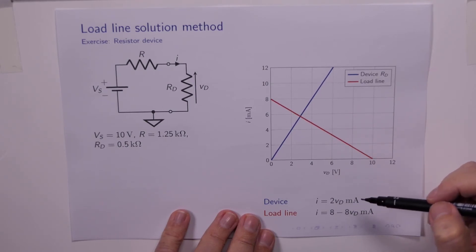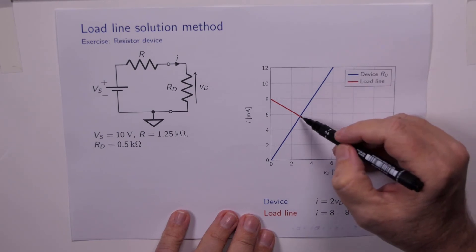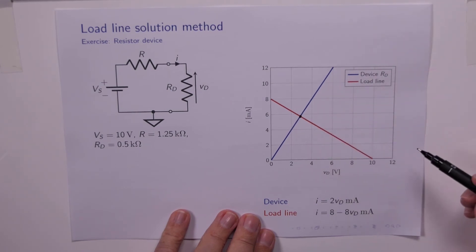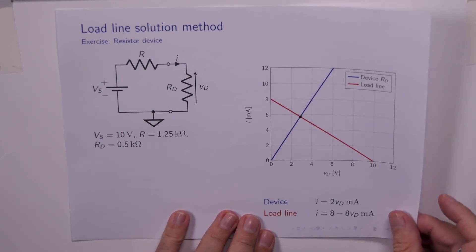And obviously the solution to this set of simultaneous equations is given by this point here. And we've got two linear equations, so it's trivial for us to find out exactly what it is. So that all makes perfect sense when we've got linear devices. What about when we don't have linear devices?